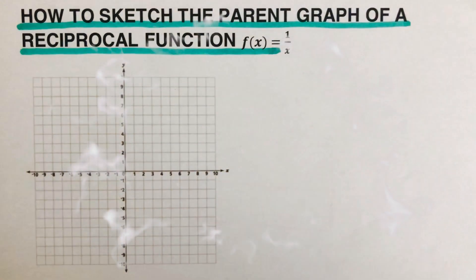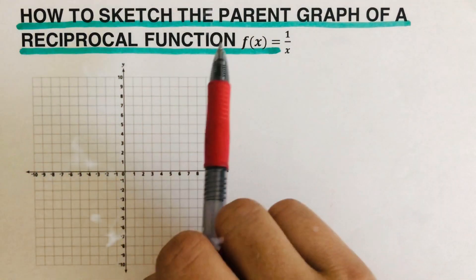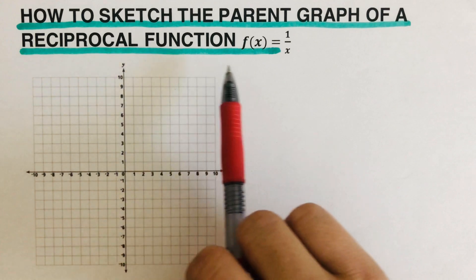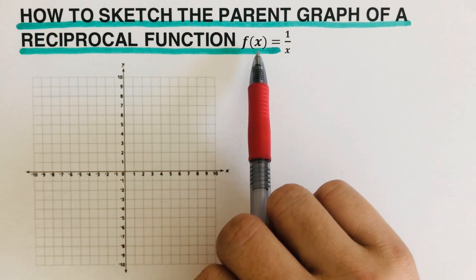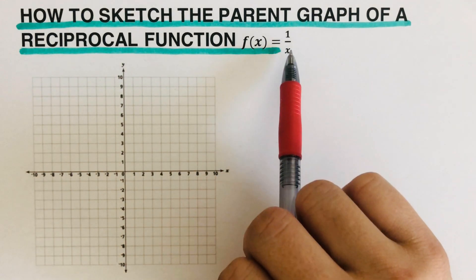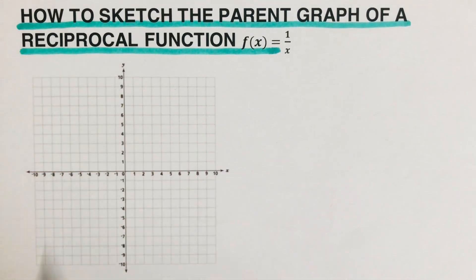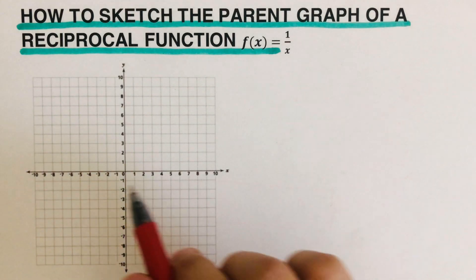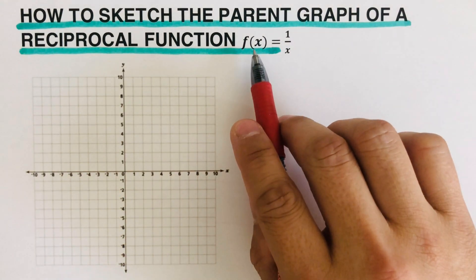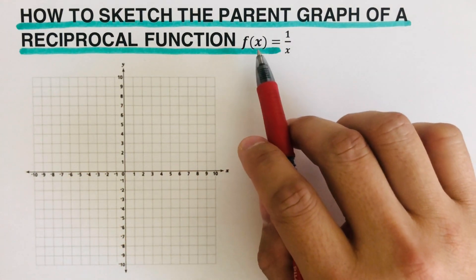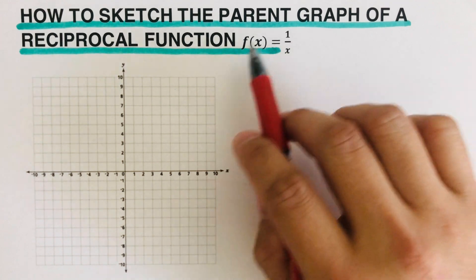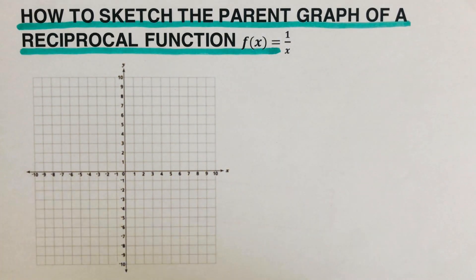In this video we are going to sketch the parent graph of the reciprocal function, which has the equation f(x) = 1/x. The other name for reciprocal function is the hyperbola function. We are going to determine the shape of this function, which can also be rewritten as y = 1/x. We'll look at how it appears when graphed on the x-y plane.